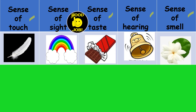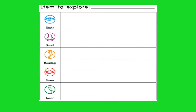Now you can find some items related to the five senses — sense of sight, sense of smell, sense of hearing, sense of taste, and sense of touch. Find and draw one object for each sense. For example, draw one object you can see, one you can smell, and so on for each of the five senses.